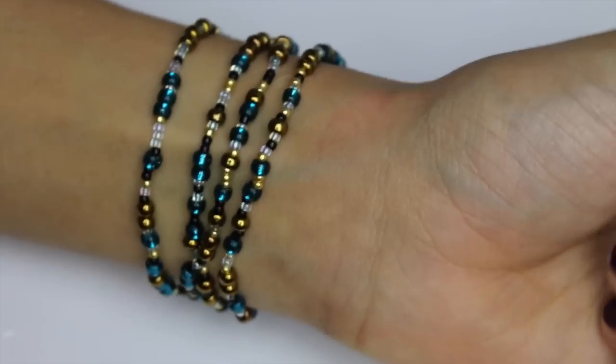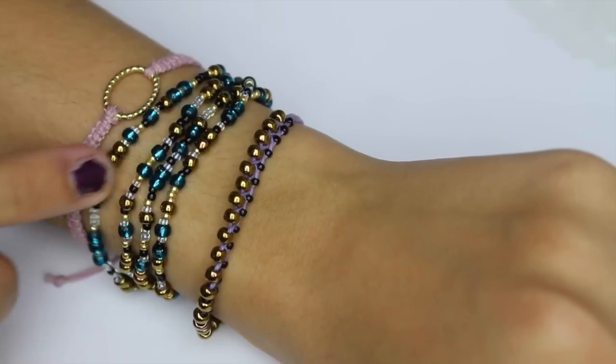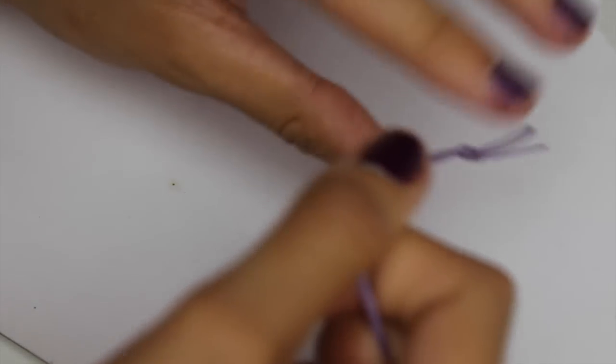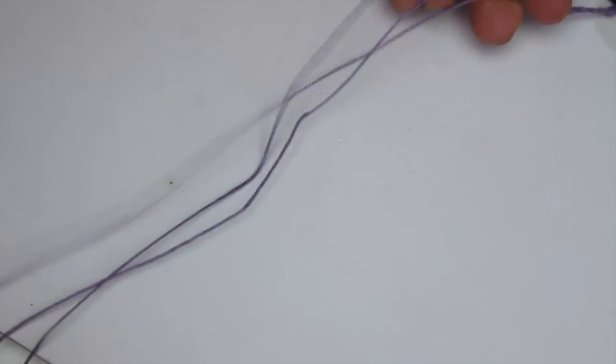For this next bracelet, you're just going to need to get three long strands of one color, and then tie a knot at the end and then tape that down to your table. Then just start braiding the strands like you normally would.